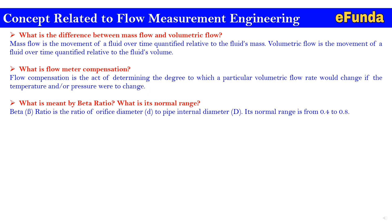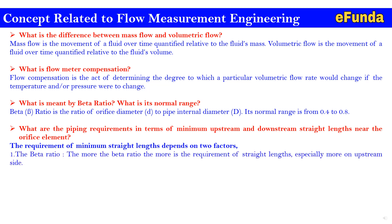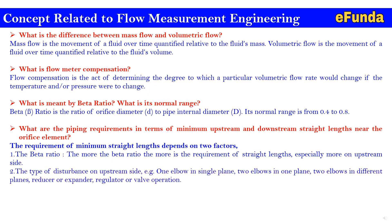What are the piping requirements in terms of minimum upstream and downstream straight lengths near the orifice element? The requirement depends on mainly two factors: first, the beta ratio — the higher the beta ratio, the greater the requirement for straight length, especially on the upstream side. Second, the type of disturbances on the upstream side, such as one elbow in a single plane, two elbows in one plane, two elbows in different planes, a reducer, expander, regulator, or valve operation.